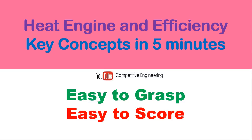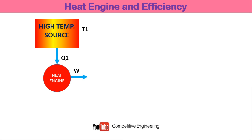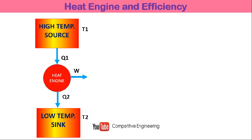Consider a heat engine and its efficiency key concepts. There is a high temperature source at temperature T1, which is a constant source having sufficient energy — when heat energy is taken from it, its temperature remains the same. Q1 amount of energy is taken from the source and given to a heat engine, which is a device that receives heat energy and produces work W. After producing work, the heat engine rejects Q2 amount of heat to a low temperature sink at temperature T2.